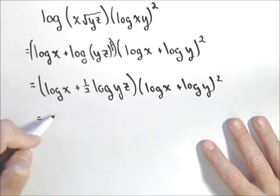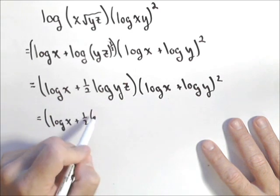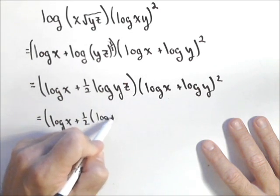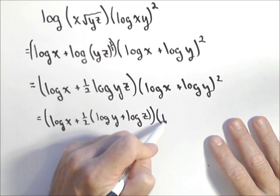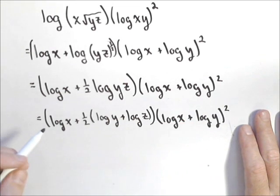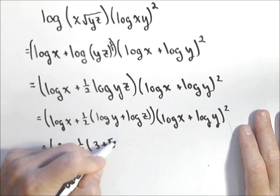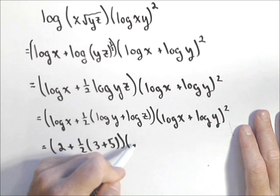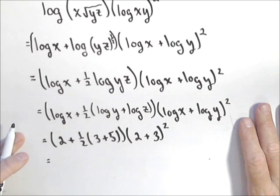Last step, we need to expand this one, because we don't know what log of yz is. So we have log of x, plus one-half. Now this does need parentheses when I split it: log of y, plus log of z, close those parentheses. Now this one was already done, log of x, plus log of y, the quantity squared. Now we can substitute our values. The log of x was two, so we have two plus one-half times three plus five, times two plus three, the quantity squared.